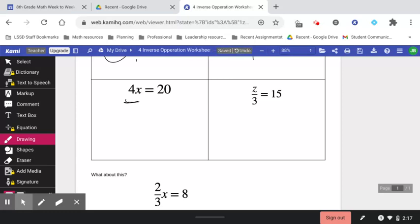So this says 4 times x equals 20. Now, maybe in your head you can already tell, well, 4 times 5 is 20. So x must be 5. And if you're thinking that, yes, you are right.